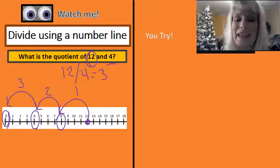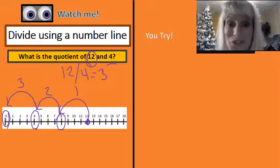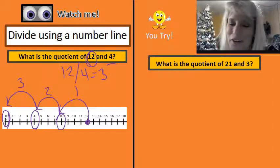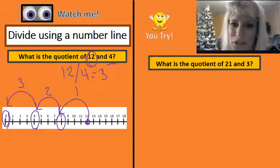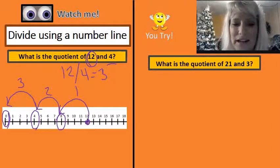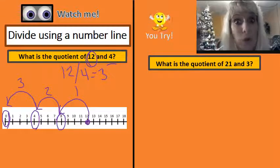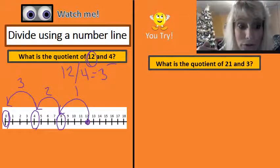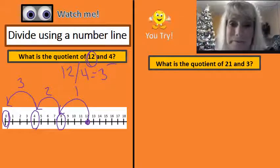All right, now time for you to try. What's the quotient of 21 and three? Go ahead and make a number line. Remember to start at you know where and go backwards. I'll wait for you.